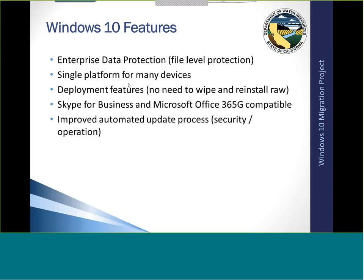The deployment features include no need to wipe and reinstall everything from scratch. It's a much shorter timeframe to upgrade from Windows 7 to Windows 10 than before, when you had to format the hard drive, wipe it completely, install the operating system from scratch, then install every single application one at a time. This represents a huge time savings, and you don't have to reconfigure every application — your Outlook will still be configured the same way it was. It's a big time saver for customers as well as for the IT department.